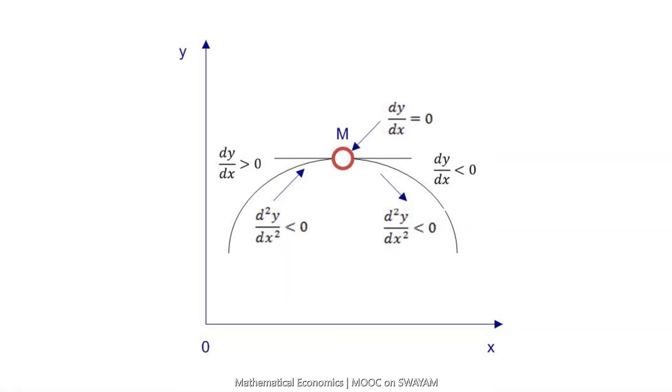And immediately after attaining a maximum value, the first derivative is less than 0 and the second derivative is also less than 0. We finally arrive at a concave curve.